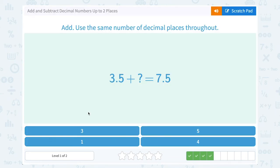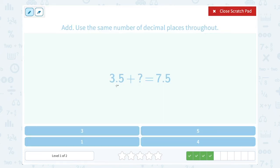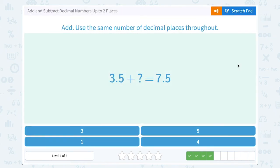3.5 plus what number is equal to 7.5? Well, this one we might be able to do some mental math because notice the tenths place did not change. They're both .5. So I must have added a whole number. Well, to get from 3 to 7, which one of these whole numbers could you add? Well, 3 plus 4 would give me 7. So our missing number must have been 4.